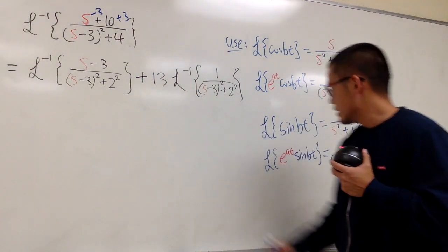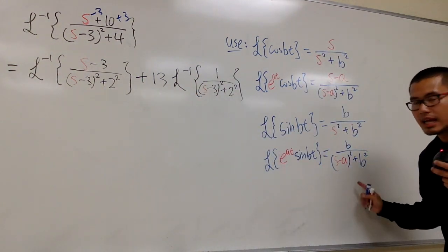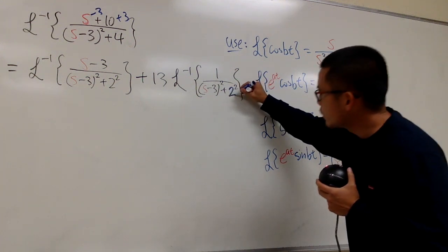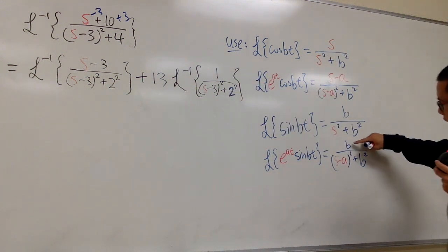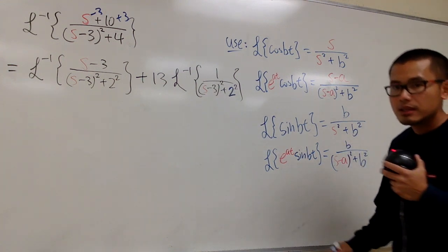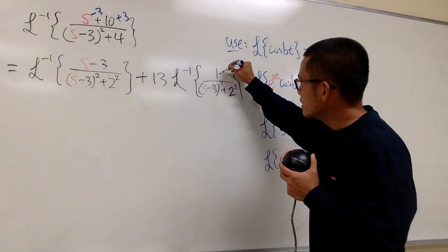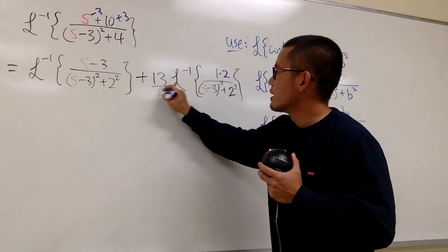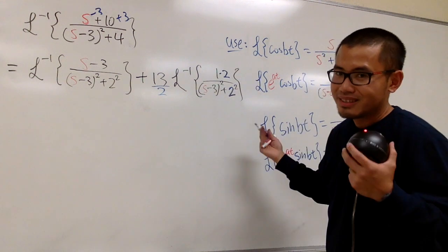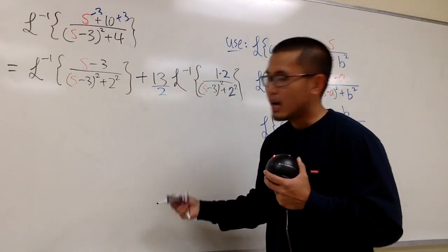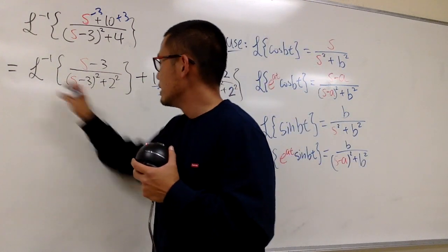This part is almost the same as that. We know that b equals 2 right here, which is great. But in order for me to use this, I also must have the 2 on the top. So let's go ahead and multiply this top by 2, but be sure to divide by 2 so that they cancel. Technically, we didn't change anything. Now let me finish this up for you.